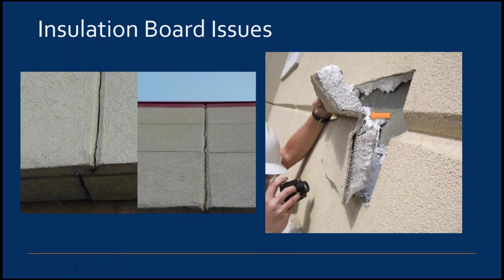Another insulation issue is thickness. The minimum thickness of insulation is three-quarters of an inch. Therefore, if aesthetic reveals are in the design, the insulation thickness must be sufficient to maintain three-quarters of an inch from the depth of the reveal back to the substrate — otherwise a crack will likely develop within the reveal. On one project, the depth of the reveal went through the entire thickness of the EPS board.